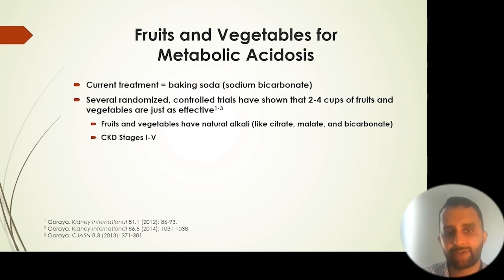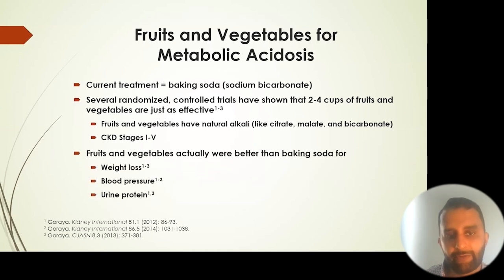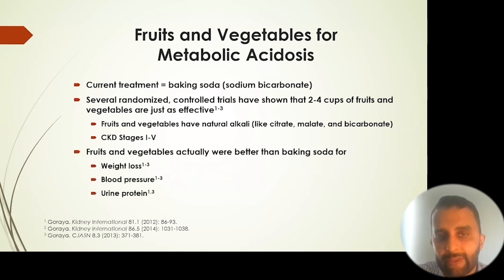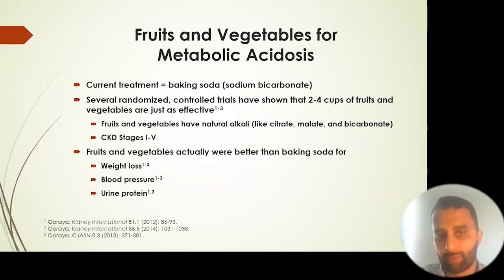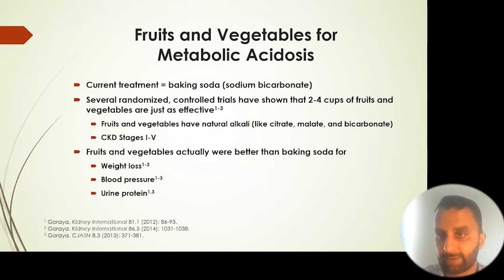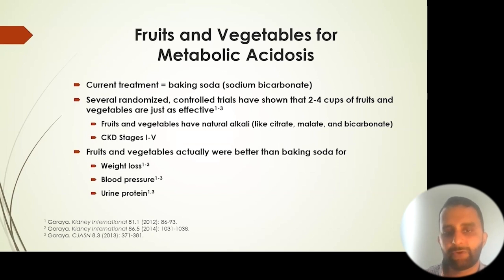This has been studied across stages of chronic kidney disease one through five. Not only are fruits and vegetables good for treating metabolic acidosis, but compared to baking soda or sodium bicarbonate, they were actually better in other parameters such as weight loss, blood pressure, and urine protein. Those who ate two to four cups of fruits and vegetables had more weight loss, lower blood pressures, and lower amounts of urine protein — more benefit than taking a pill.